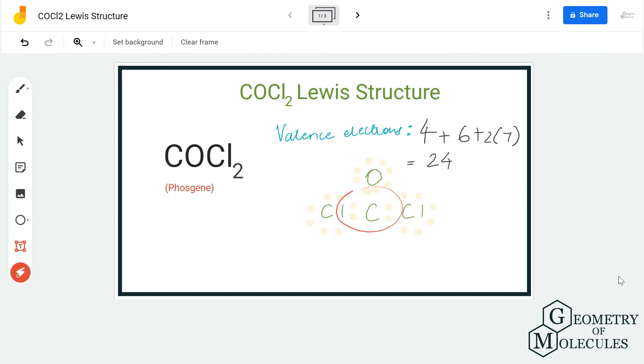The rest of all the atoms have complete octets. Now in Lewis structure, we try to attain a structure where all the atoms have complete octets. So we will try that by shifting a pair of electrons from oxygen atom to the middle of oxygen and carbon to see if it completes the octet for carbon atom.